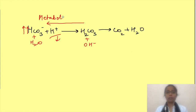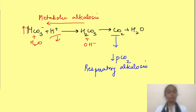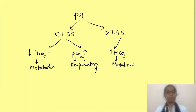In alkalosis, if it is due to loss of hydrogen ions, hydroxyl ions of water combine with carbonic acid and the reaction proceeds forming bicarbonate and water, causing an increase in bicarbonate concentration — this is metabolic alkalosis. While if the respiratory system is hyperactive, it excretes more carbon dioxide causing decrease in pCO2 — this is respiratory alkalosis. So if pH is high and bicarbonate is more, it's metabolic alkalosis; if pCO2 is less, it's respiratory alkalosis.